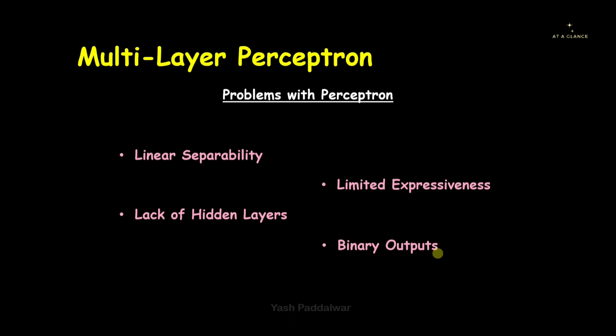The next problem is binary outputs. The perceptron algorithm builds a classifier that separates two different classes linearly, generating only two outputs. But what if we have more than two outputs? In that case we cannot use the perceptron algorithm, and that is why we have to shift to multi-layer perceptron.